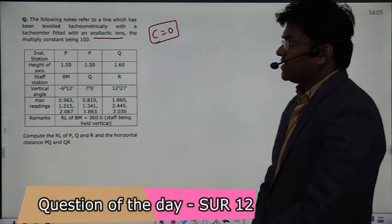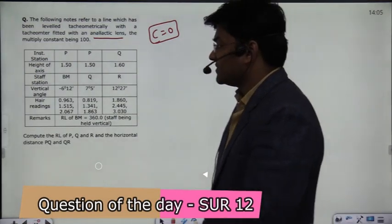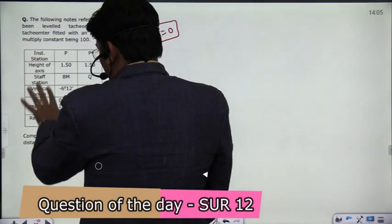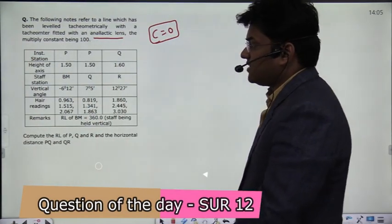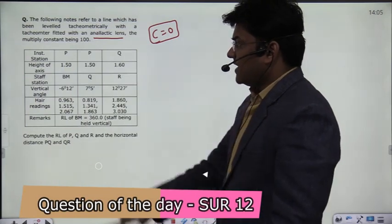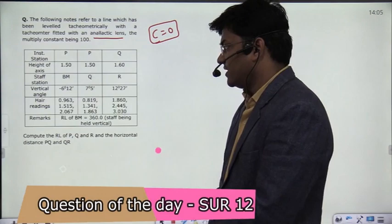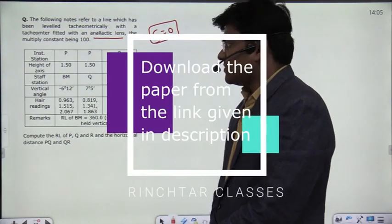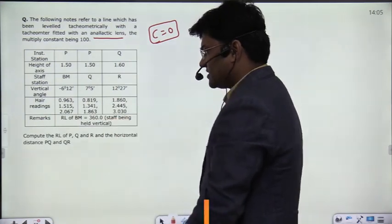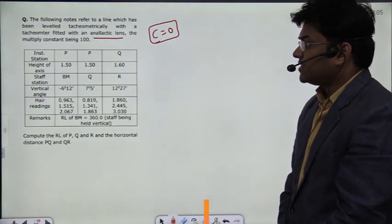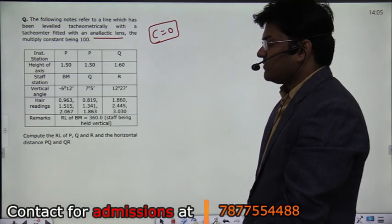The multiplying constant for a good tachymeter is 100, as we have discussed in class. Here we analyze the data: the instrument, i.e. tachymeter, is at P. The height of the axis is 1.50. The staff station is the benchmark, with RL given. The benchmark RL is 360 meters. The vertical angle is minus 6 degrees 12 minutes.